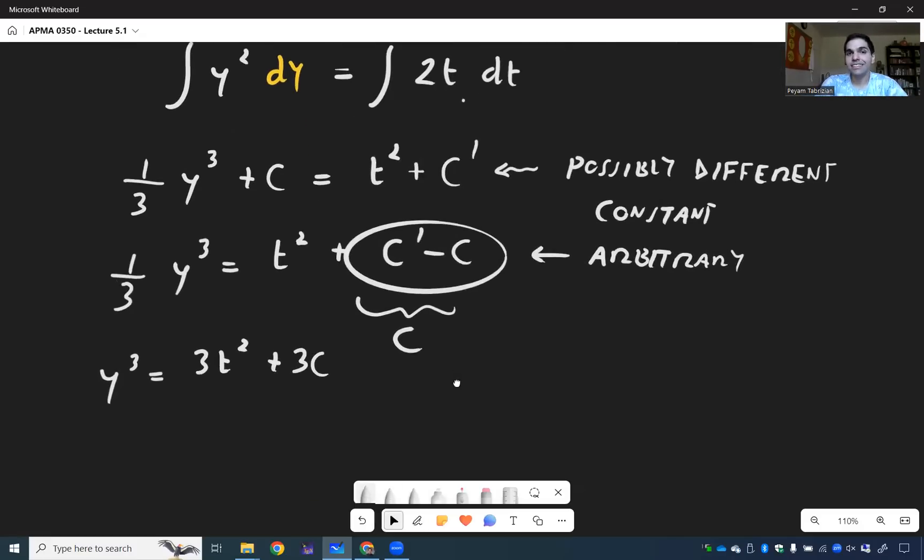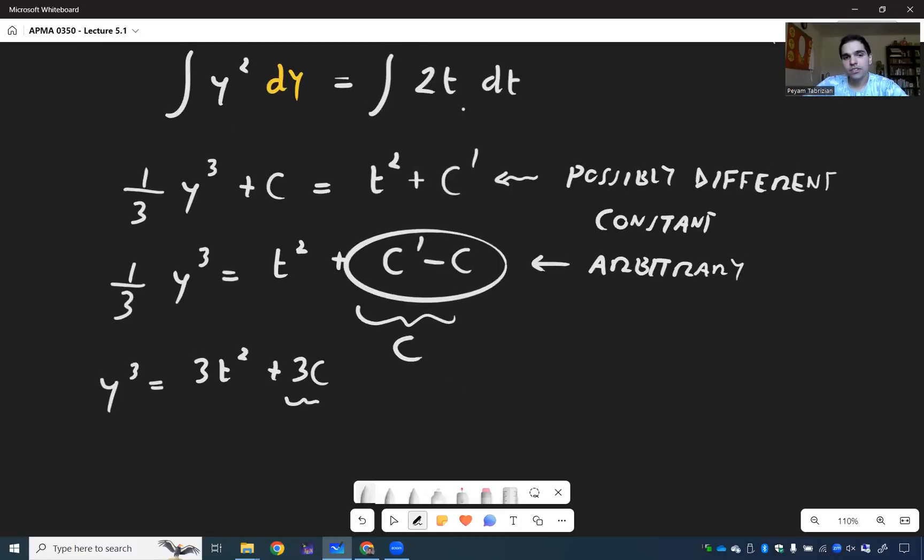So what we get is essentially y cubed then becomes 3t squared plus 3c. Once again, c is arbitrary, so it's 3c. And so what we get is y cubed is 3t squared plus c, and then just take cube root. And y is cube root of 3t squared plus c.